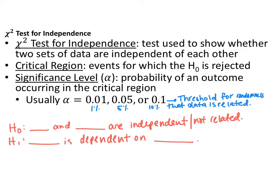The first statistical test we're looking at is the chi-squared test for independence. We'll have two chi-squared tests over the next few days. For the test for independence, the null hypothesis always assumes the variables are not related or independent of each other — any connection is random, just chance. The alternative hypothesis is that they are dependent on each other.